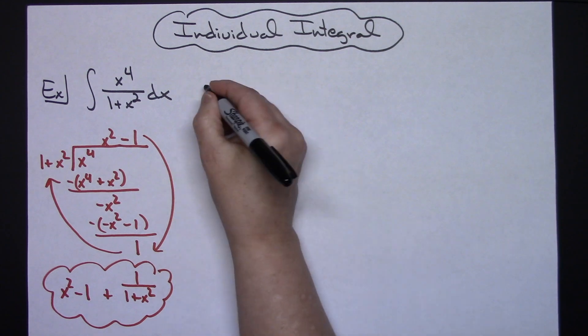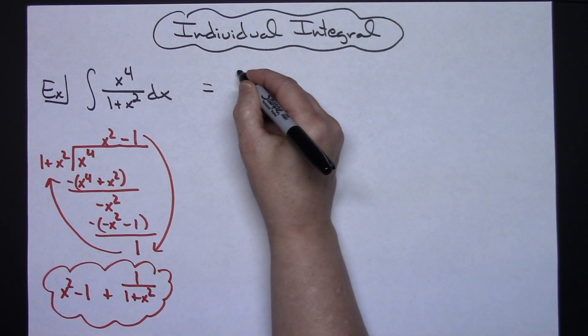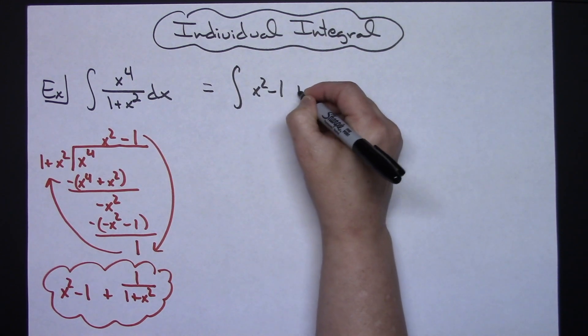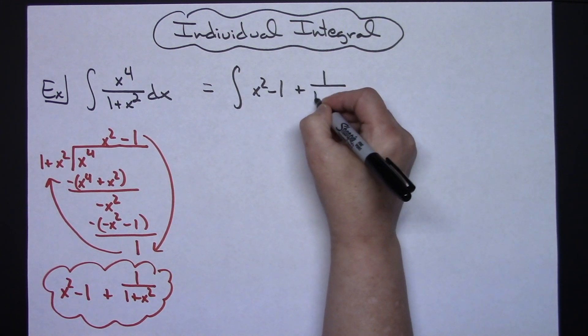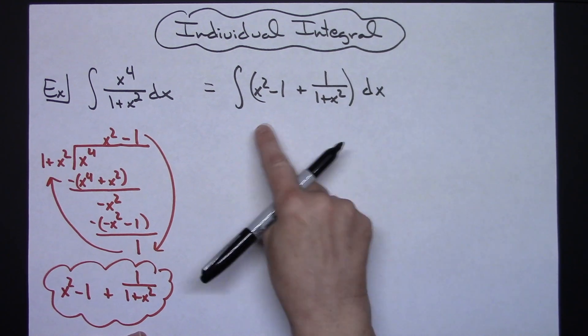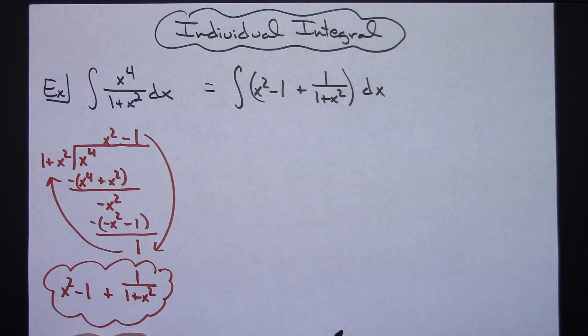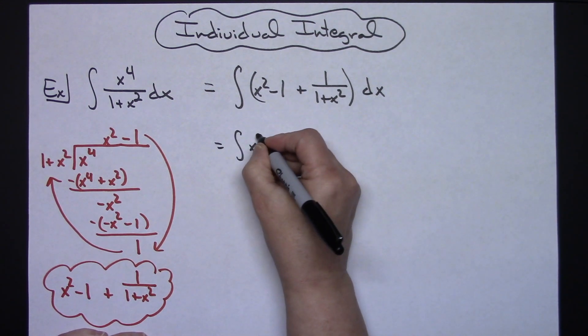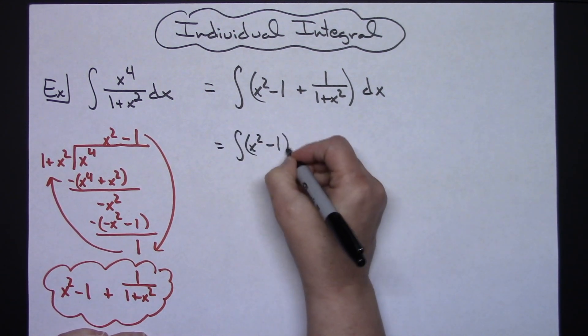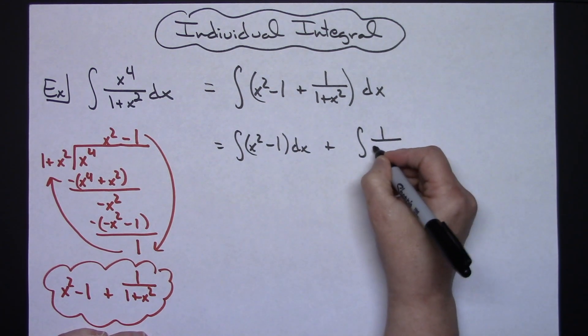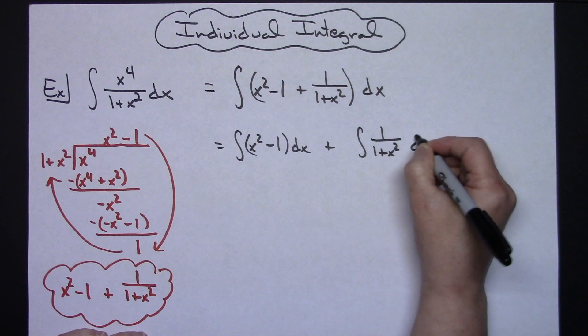So then we'll come up here and rewrite this integral as the integral of x squared minus 1 plus 1 over 1 plus x squared. Now what I'm going to do with this is separate this into two separate individual integrals. So we'll have the integral of x squared minus 1 dx plus the integral of 1 over 1 plus x squared dx.